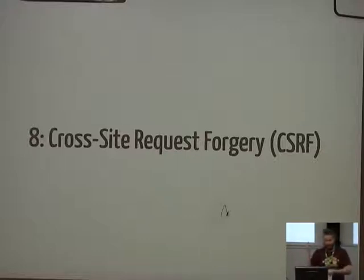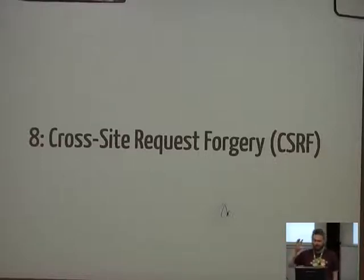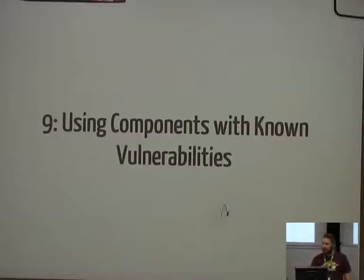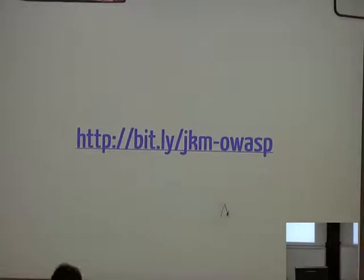Cross-site request forgery is actually one that Rails, Django, and a number of other web frameworks have built-in protection for, but the number of ways you can still be exploited are real problems. The remaining items include components with known vulnerabilities and unvalidated redirects and forwards. There's a URL for the full video with much more detail — go read it.